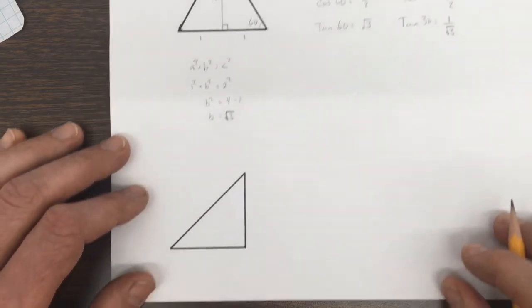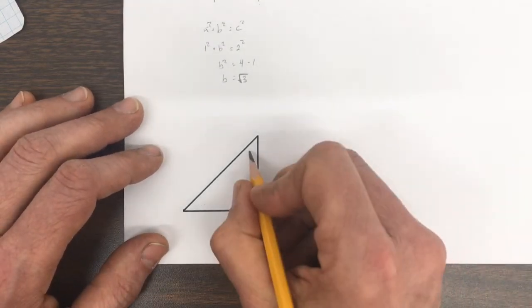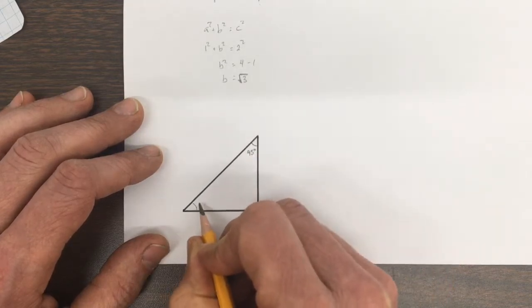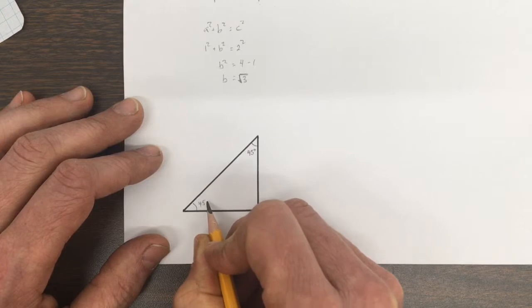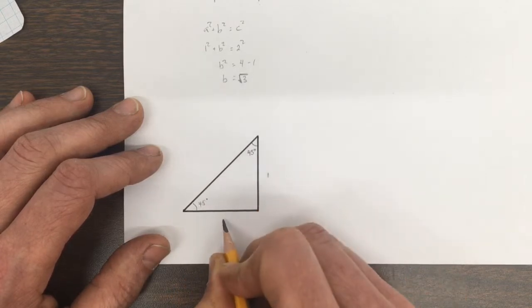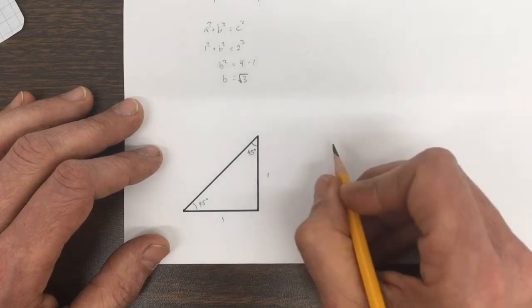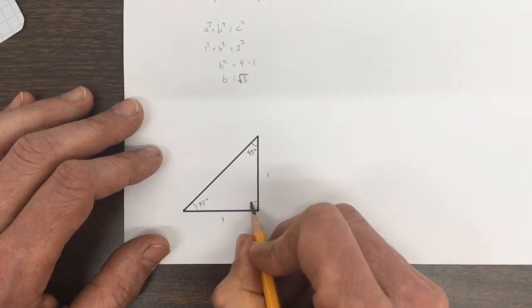The second special triangle is the one where we have 45 degrees in the corner, both corners, and each side is one unit long. Of course, this is a 90.